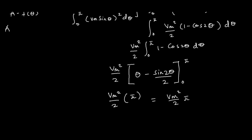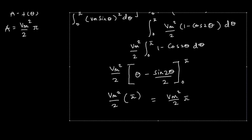Therefore the squared area for the sine part is A₁ = Vm²π/2.